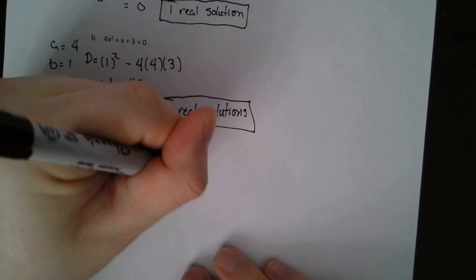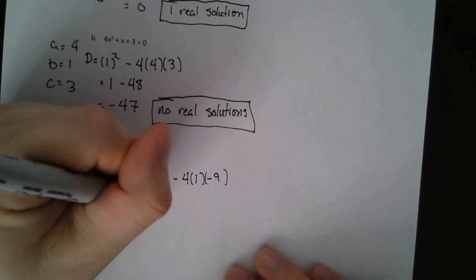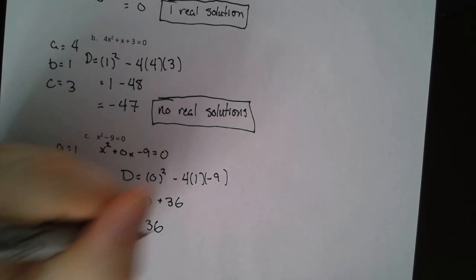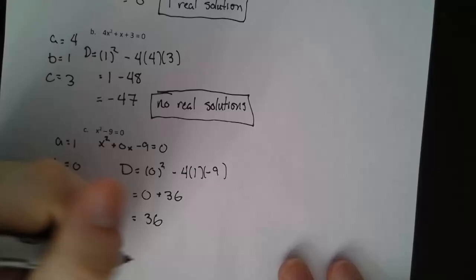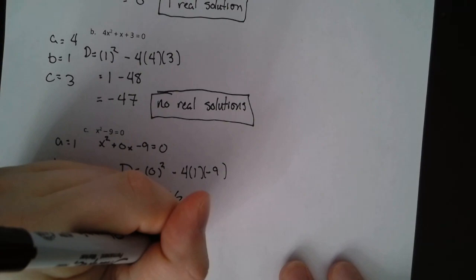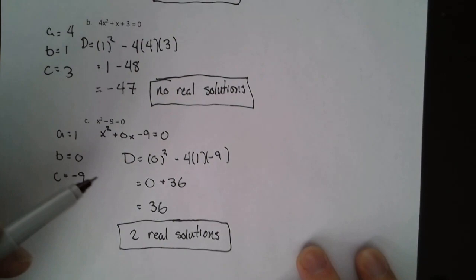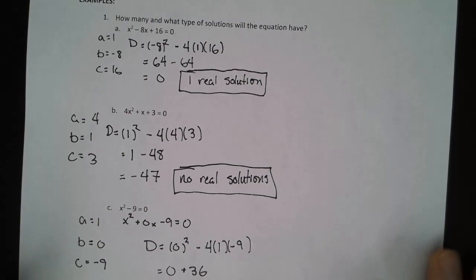So our discriminant is B squared, 0 squared, minus 4 times A, which is 1, times C, which is negative 9. 0 squared is 0. Negative 4 times 1, times negative 9 is positive 36. 0 plus 36 is 36. So here we have a positive discriminant. So that means we have two real solutions. The reason for that is this is something that we can square root because it's positive. And remember when you square root something, you have the plus and the minus version. So you have a multiplicity here of two solutions.